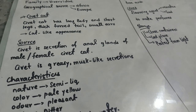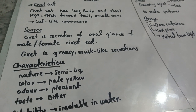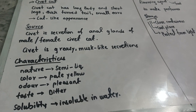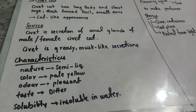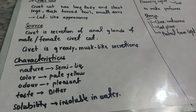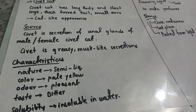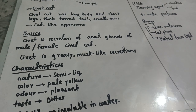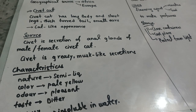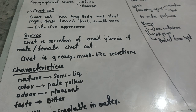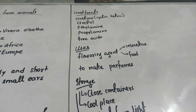Let's discuss the characteristics of civet. The nature of this drug is semi-liquid. The color is pale yellow. The odor is very pleasant, and the taste is very bitter. Regarding solubility, it is insoluble in water but soluble in other organic solvents. Due to its pleasant odor, it is also used in the preparation of perfumes.